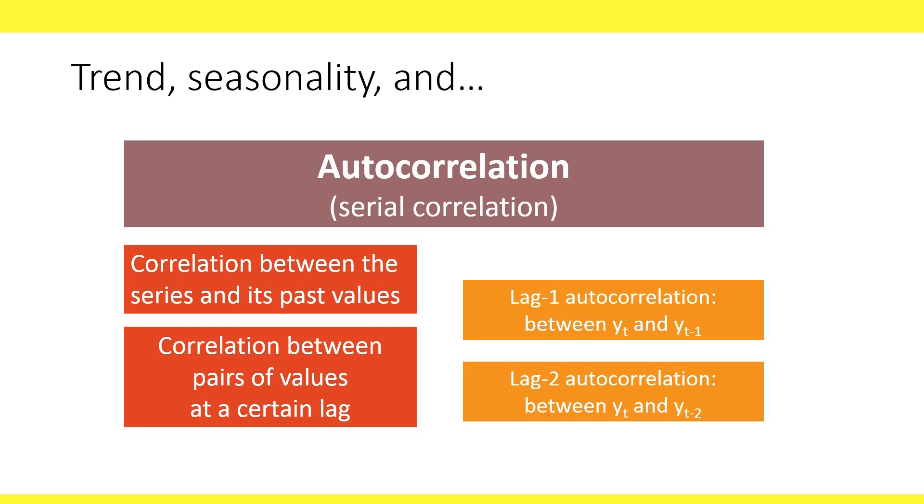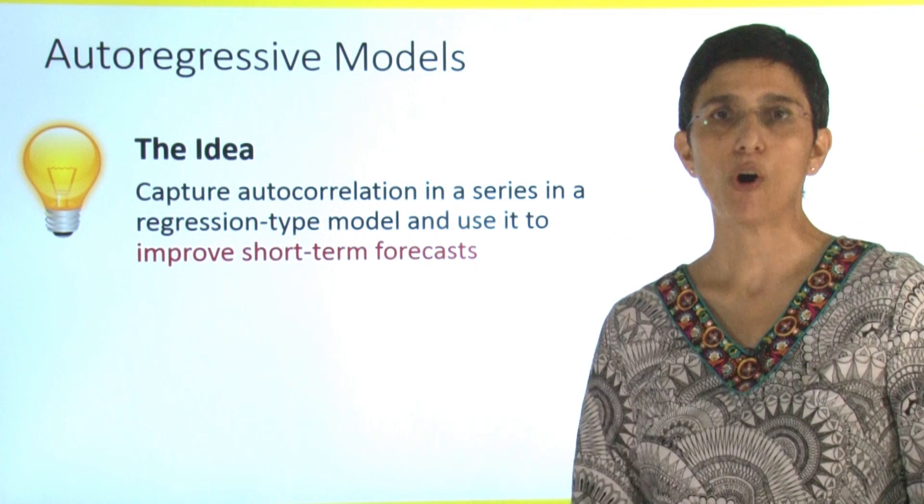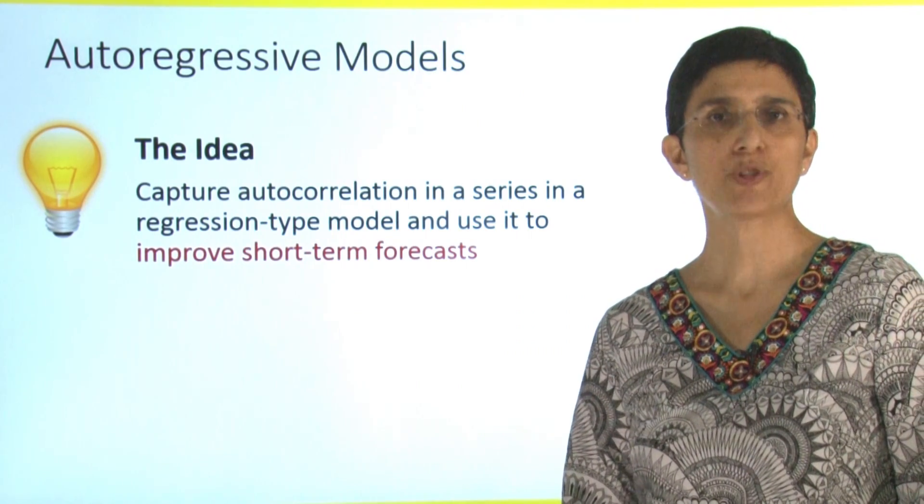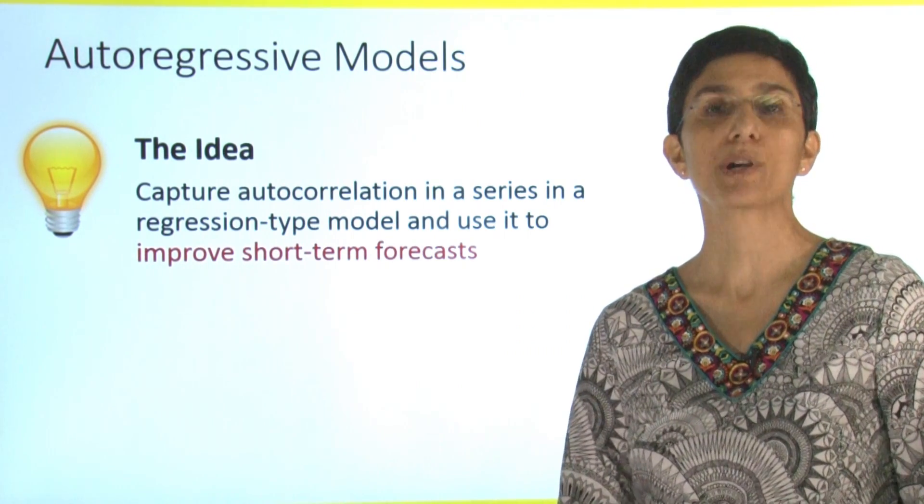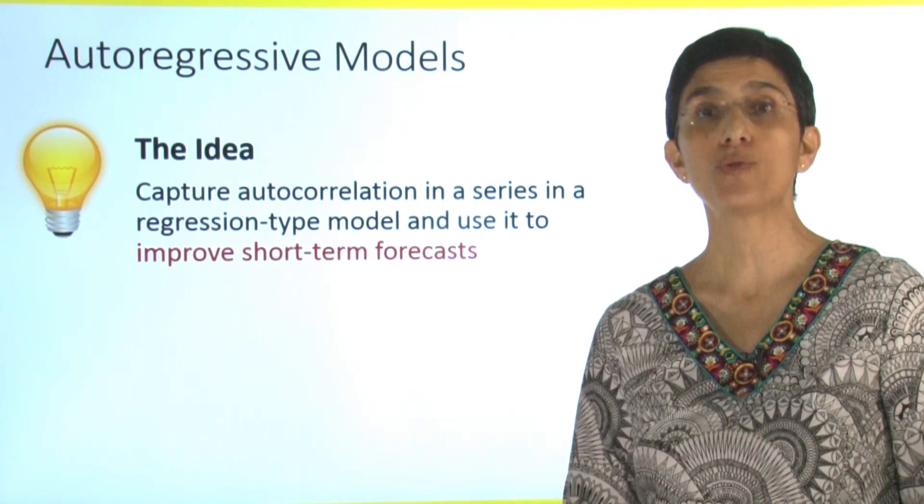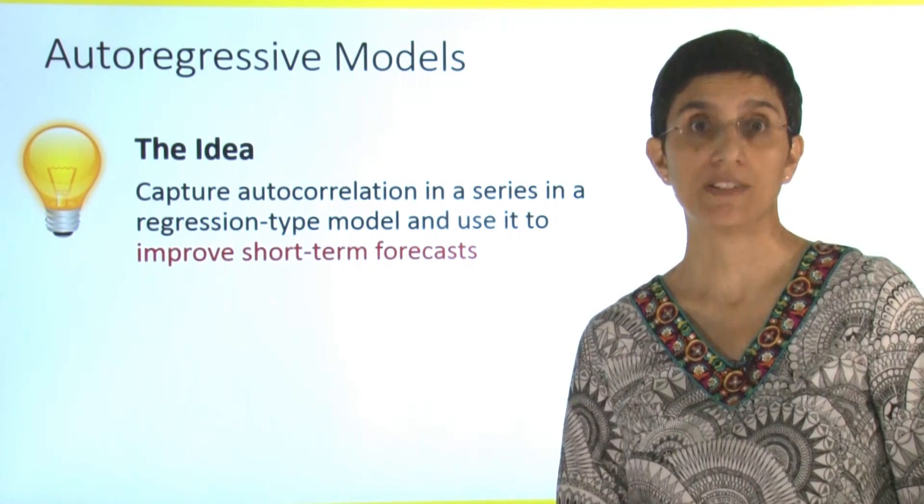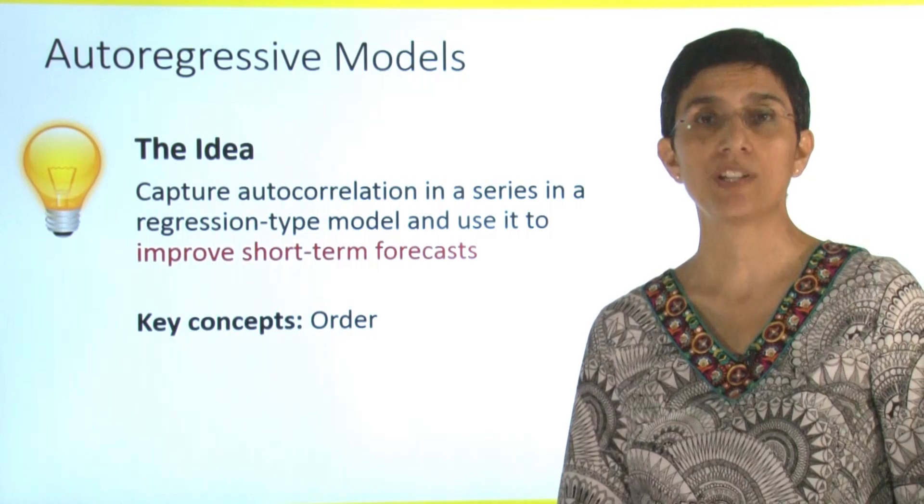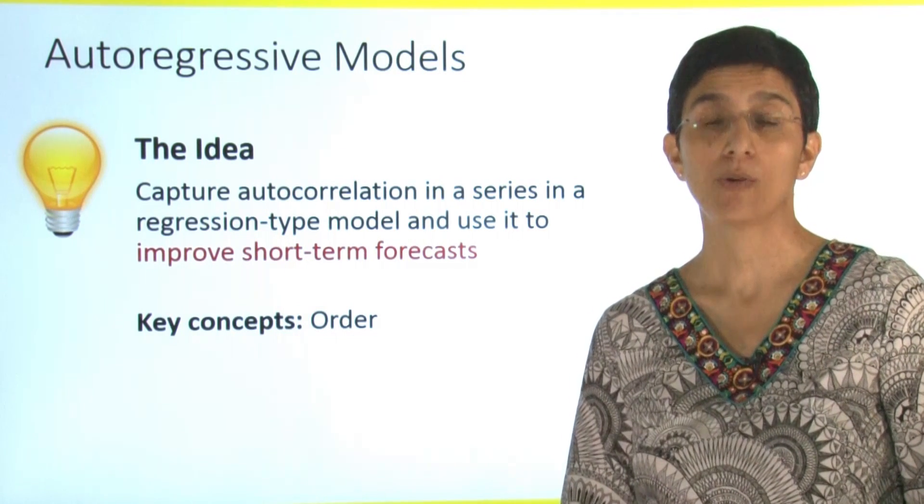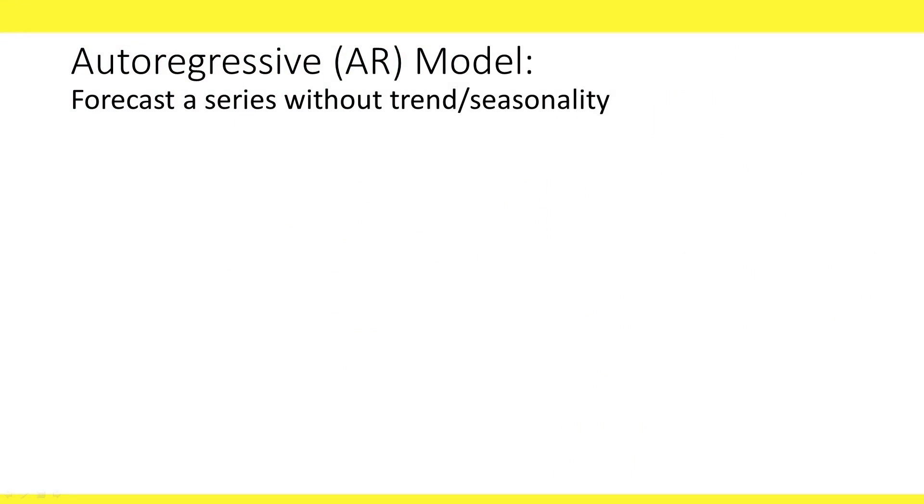Autocorrelation captures the correlation between pairs of values of the series at a certain lag. For example, a lag one autocorrelation is the correlation between all immediate neighboring values in the series. The idea of autoregressive models is to capture autocorrelation in a series in a regression-type model and use it to improve short-term forecasts. The key concept here is going to be the order of the model, or the order of the AR.